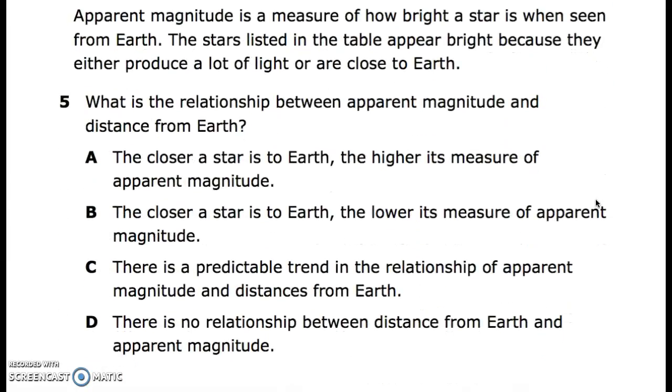Number five. What is the relationship between apparent magnitude and distance from Earth? A. The closer a star is to Earth, the higher its measure of apparent magnitude. B. The closer a star is to Earth, the lower its measure of apparent magnitude. C. There is a predictable trend in the relationship of apparent magnitude and distances from Earth. D. There is no relationship between distance from Earth and apparent magnitude.